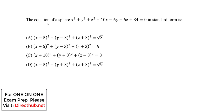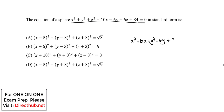Using this equation, we group the terms next to each other: x squared plus 10x, then y squared minus 6y, then z squared plus 6z, plus 34 equals zero. This is always the first step, and then we will complete the square.